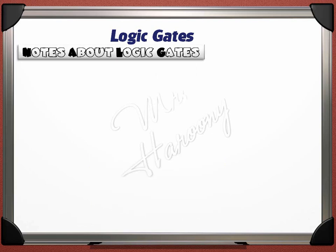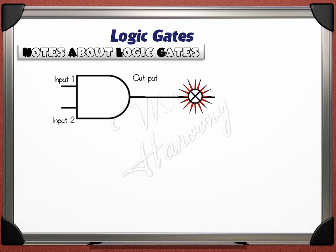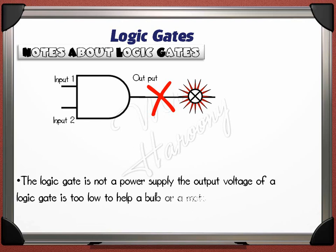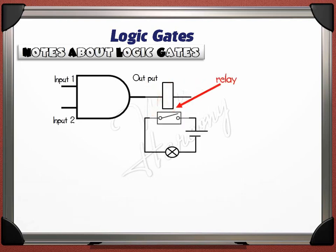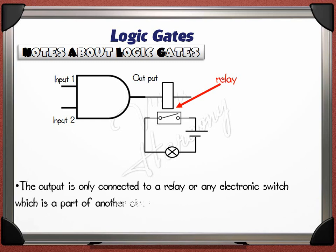An important note: if a logic gate controls the work of a bulb, the bulb cannot be directly connected to the output of the logic gate. The logic gate is NOT a power supply — the output voltage is too low to power a bulb or motor. The output is only connected to a relay or electronic switch, which is part of another circuit with its own power supply.